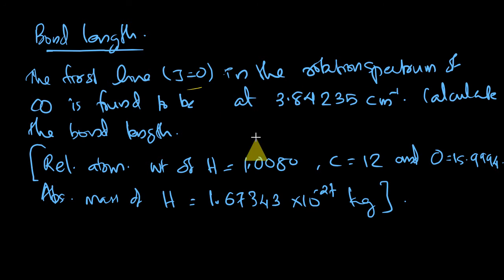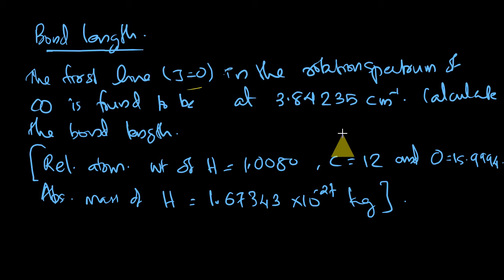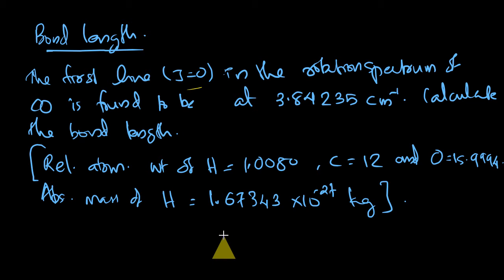We are given the wave number observed in the rotation spectrum of carbon monoxide, and this spectral transition corresponds to the transition from J equals 0 to J equals 1 state. This is the wave number corresponding to the J equals 0 to J equals 1 transition, and from this we have to calculate the bond length in carbon monoxide.